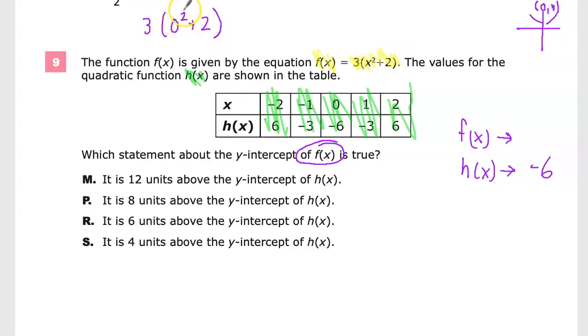If you have nothing times itself, it's still nothing. So this 0 becomes 0, and 0 plus 2 is 2. 3 times 2 is 6. So f(x) is equal to 6.